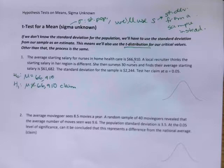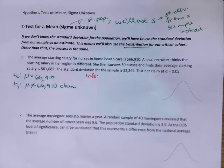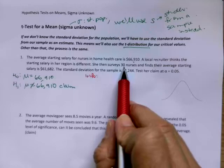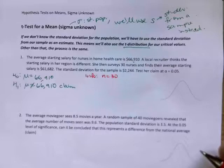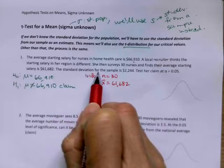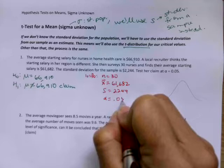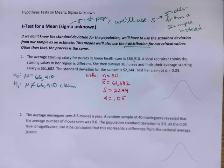So we do our hypotheses and our claim. That's our first step. Let's go ahead and we're going to gather the info. So this is now, we're going into the sample, right? So we're reading about the sample information. She then surveys 30 nurses. So 30 is how many people she surveyed. So that gets an N equals 30. Finds their average starting salary, so that's X bar is 61,682, and the standard deviation for the sample, so that's S equals 2,244. And then test your claim, so we have alpha is 0.05.